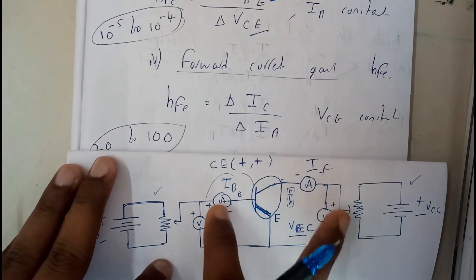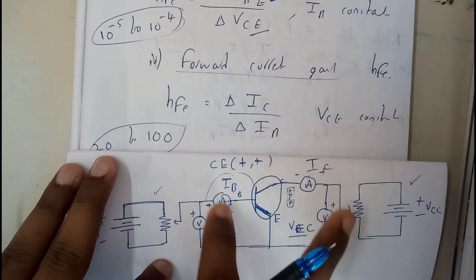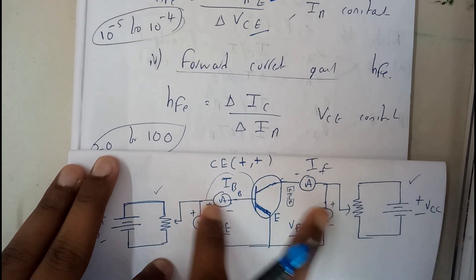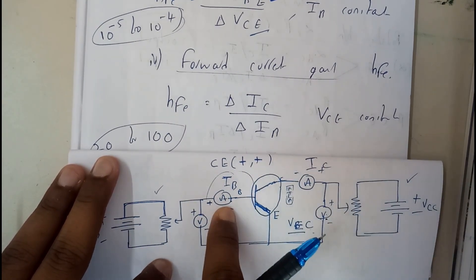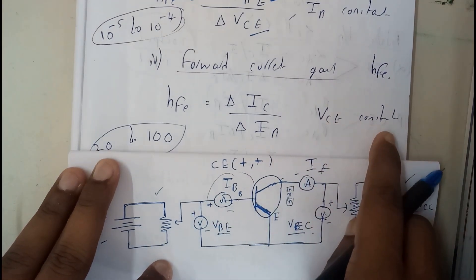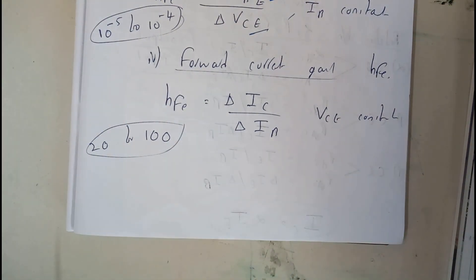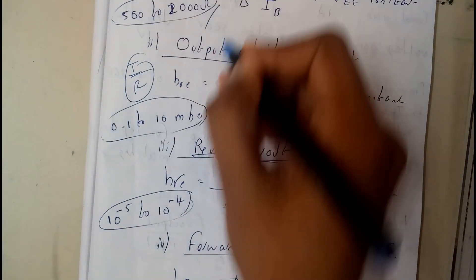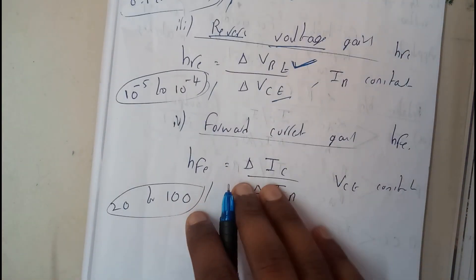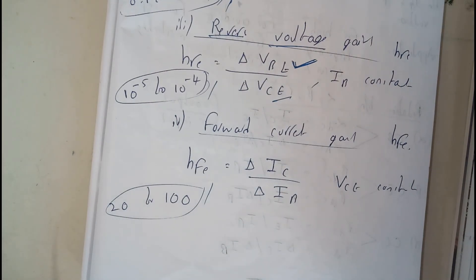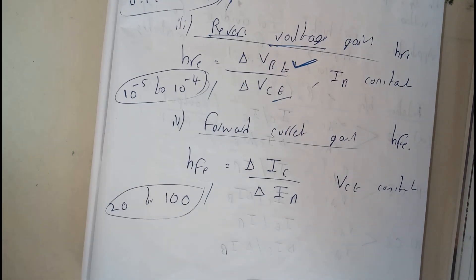Forward current gain refers to current, so it is output by input — IC by IB — keeping VCE constant. If you want, you can write down the ranges at which these values vary. In the next tutorial we'll be going through the last configuration, which is common collector. Thank you, thanks for watching.